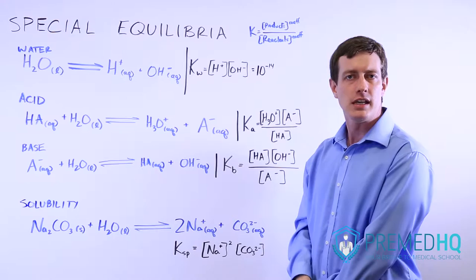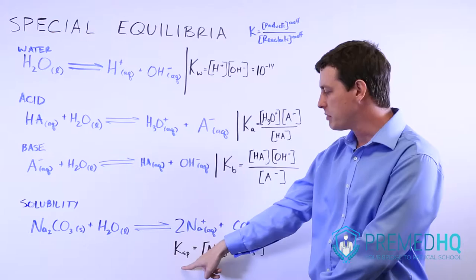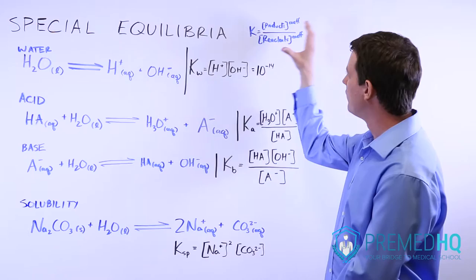We have KW, Ka, KB, and KSP, which is the solubility product. All of these are just following the basic rule of how to come up with an equilibrium constant, but they all tell us certain things.